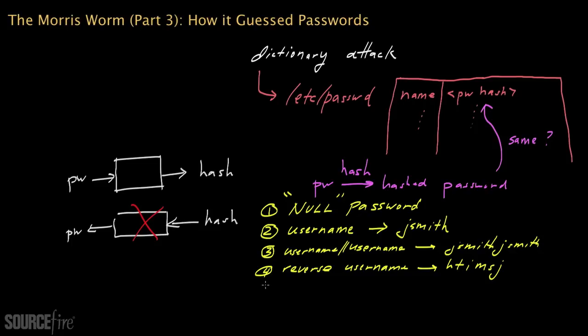And then finally, the fifth approach to guessing a simple password was to look at data from what's known as the GECOS field in the /etc/passwd file. This GECOS field simply contains additional information about a user, like their nickname or their full name. And if you have their nickname, you can try that as a password guess. If you have their full name, you can try either their first name or their last name as the guess for the password.